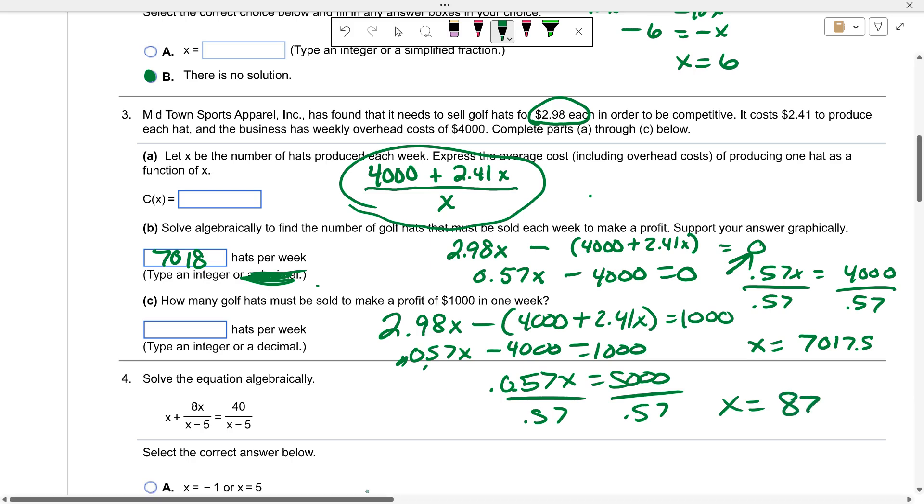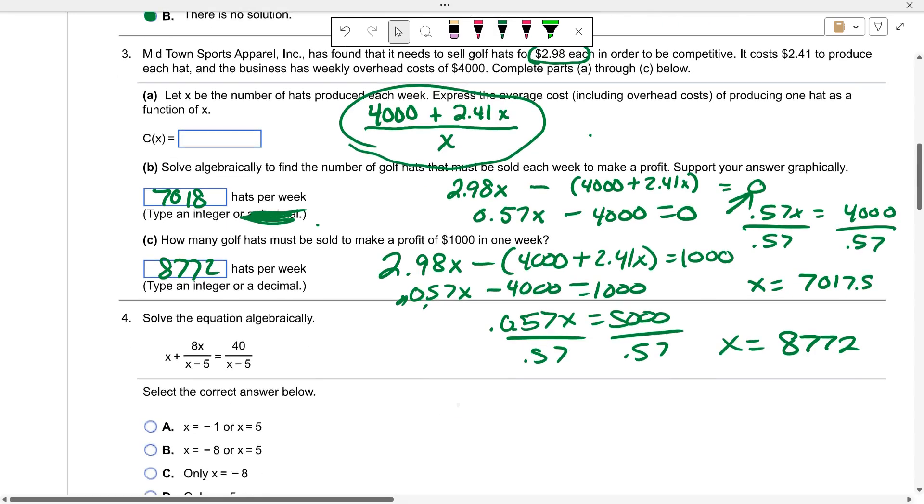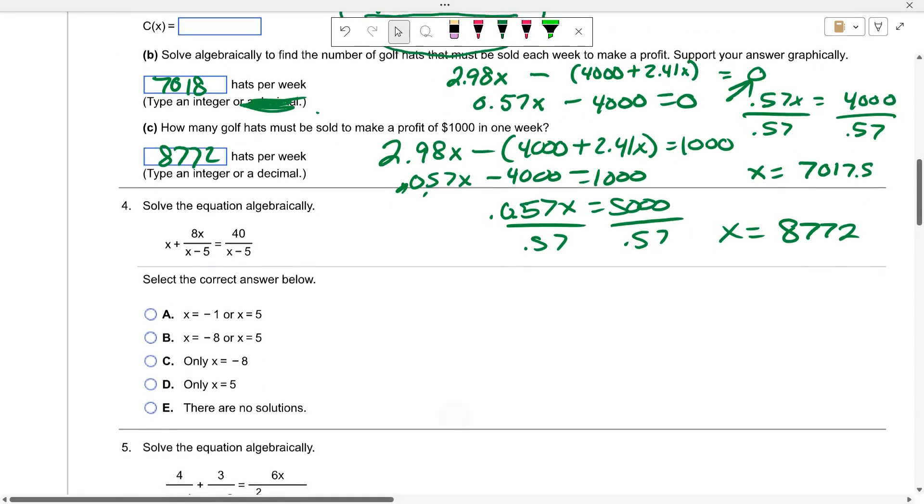$5000 divided by 0.57 equals 8772. So 8772 hats need to be sold to make a profit of at least $1000. You're not making much money for all the assets produced.